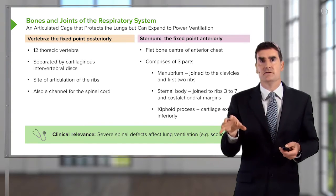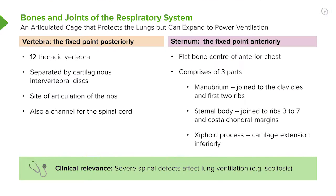The clinical relevance of this bony structure is that severe spinal defects — a curvature of the spine, a scoliosis — will affect the mechanics of breathing, because it affects the mechanics of expansion of the skeletal structures during respiration. This can actually lead to respiratory failure if severe scoliosis is present.